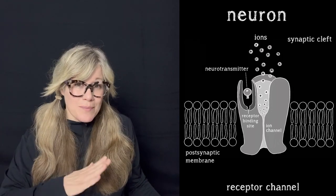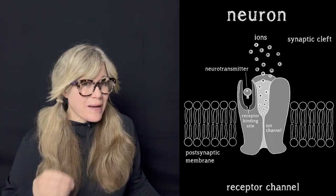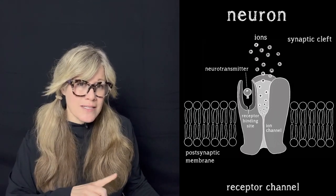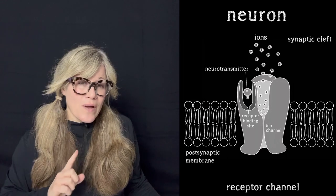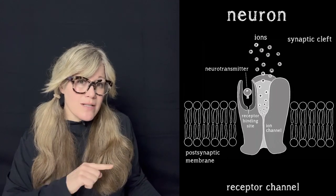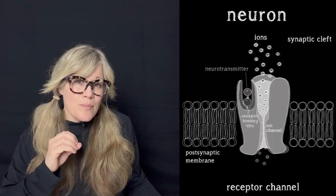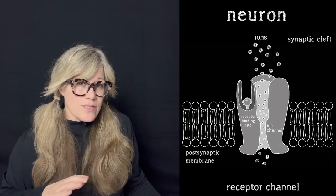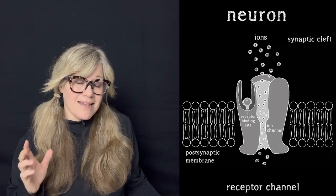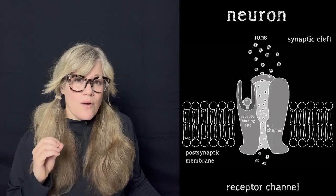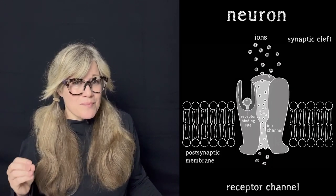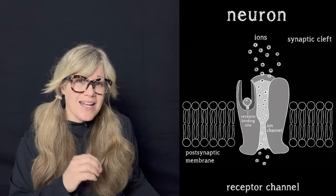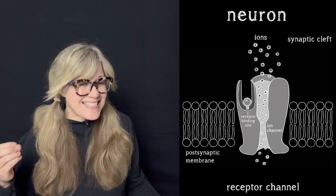They're also called ionotropic receptors or ligand-gated receptors, but receptor channels is easier to say and remember. What makes them special is that they are protein units that contain an ion channel but also have receptors attached to them that, unless activated, keep the ion channels closed or gated. This receptor part of the unit has a special binding site that is designed specifically for its partner neurotransmitter molecule. When the neurotransmitter diffuses across the synaptic cleft, it will bind with the receptor like a key to a lock — no other type of neurotransmitter can bind to that receptor.